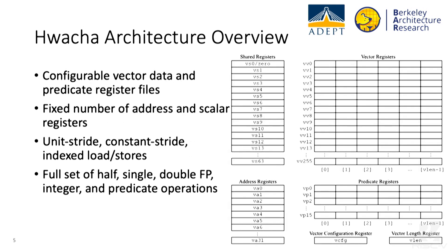Here's a quick overview of what's in the ISA itself — all the state mandated by the architecture. On the left-hand side are the configurable vector data and predicate register files, where you can choose how many to use at a time. On the right-hand side are the fixed-number address and scalar registers. It's a register-register ISA with a full complement of unit-strided, constant-strided, and scatter-gather loads and stores, as well as arithmetic ops on half-precision, single-precision, and double-precision floating point, integers, and predicate operations.